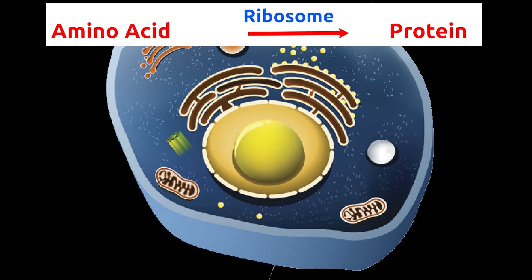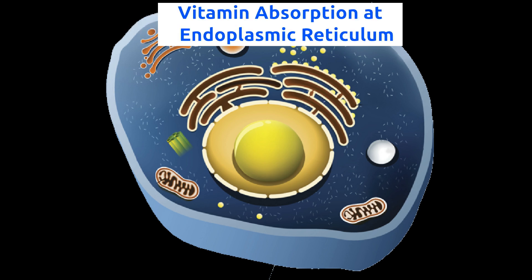Ribosomes use amino acids and synthesize protein. Protein is used in cell repairing and generating new cells.